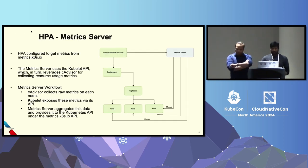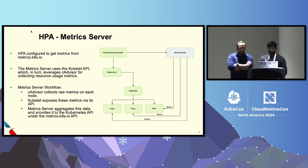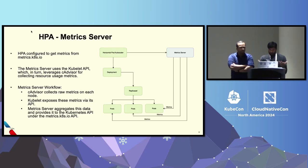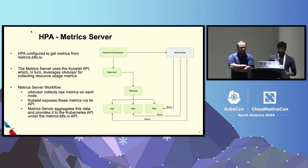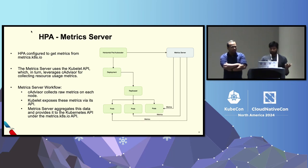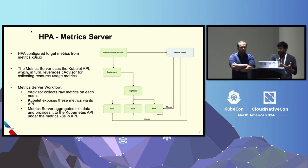Let's deep dive into the metrics server. HPA is configured to get metrics from the metrics.k8s.io server. The metrics server uses the Kubelet's API, which in turn leverages cAdvisor on the backend for collecting resource metrics. In the workflow: cAdvisor first collects raw metrics on each node, then the Kubelet exposes those metrics via a readable API, and then the metrics server aggregates this data and moves it to the Kubernetes API.